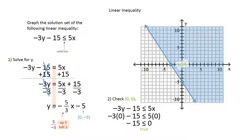This is the graph of the linear inequality negative 3y minus 15 is less than or equal to 5x.